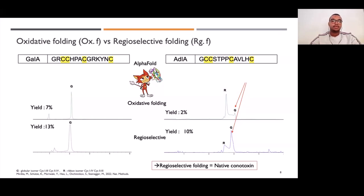So after purification, we did a lot of purification to get the yield of each result. For oxidative folding, for G1A, we obtained 7% of globular isomer, and for regioselective, it was double the rate of the oxidative folding. It's the same thing for AD1A, so with regioselective folding, we can obtain the globular isomer with a high-yielding one-pot reaction.